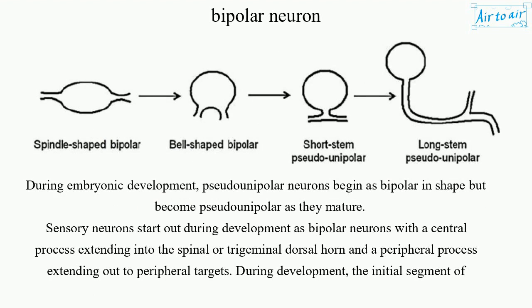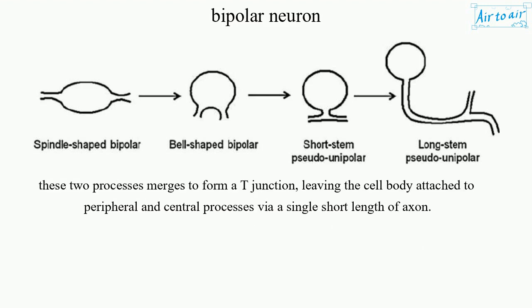During embryonic development, pseudounipolar neurons begin as bipolar in shape but become pseudounipolar as they mature. Sensory neurons start out as bipolar neurons with a central process extending into the spinal or trigeminal dorsal horn and a peripheral process extending out to peripheral targets. During development, the initial segment of these two processes merges to form a T-junction, leaving the cell body attached to peripheral and central processes via a single short length of axon.